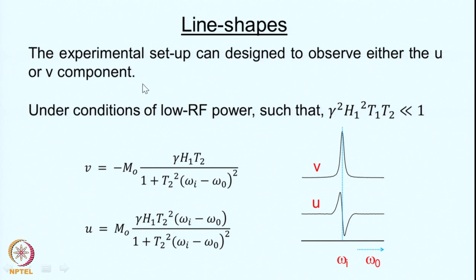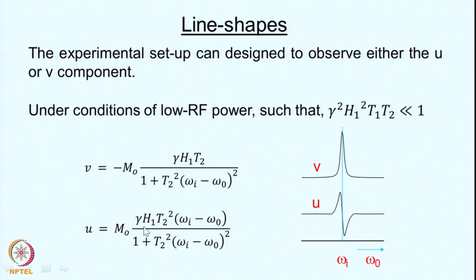The experimental setup can be designed to observe either the U or the V component. Under conditions of low RF power such that γ²H₁²T₁T₂ ≪ 1 — called the no-saturation condition — the expressions simplify: V = −M₀γH₁T₂ / (1 + T₂²(ωᵢ − ω₀)²), and U = M₀γH₁T₂²(ωᵢ − ω₀) / (1 + T₂²(ωᵢ − ω₀)²), where ωᵢ is the nuclear spin precession frequency.